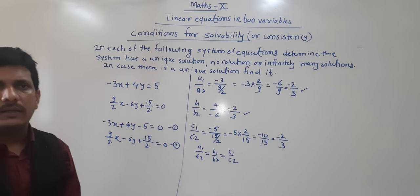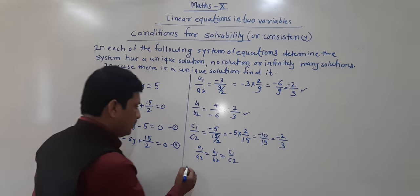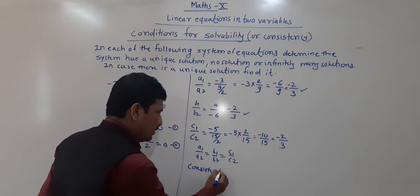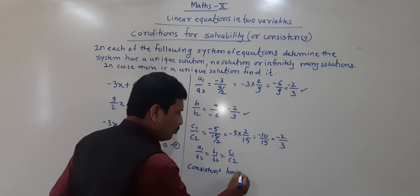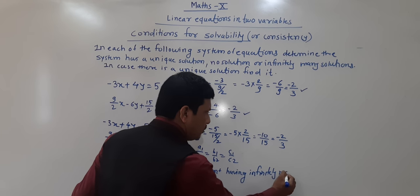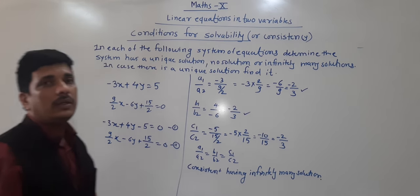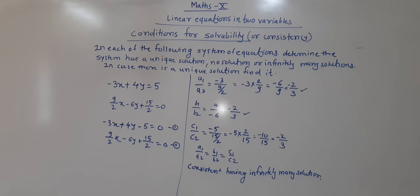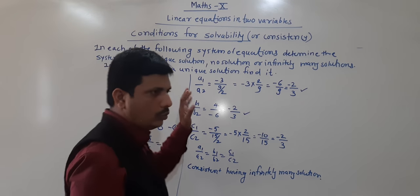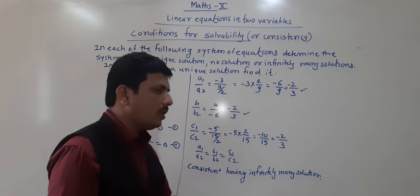Since all three ratios are equal, there are infinitely many solutions. This is consistent with infinitely many solutions, because ratios are all equal. The two lines represented by equations first and second are coincident lines — they will coincide on the same position in the Cartesian plane, giving infinitely many solutions.